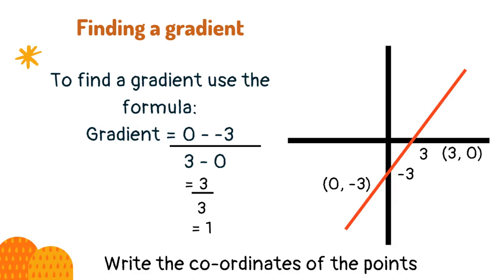As minus and a minus give a plus, this becomes 0 plus 3, giving a change in y of 3. With the x coordinates we can see that the final position is 3 and the initial is 0. Subtracting 0 from 3 gives 3.